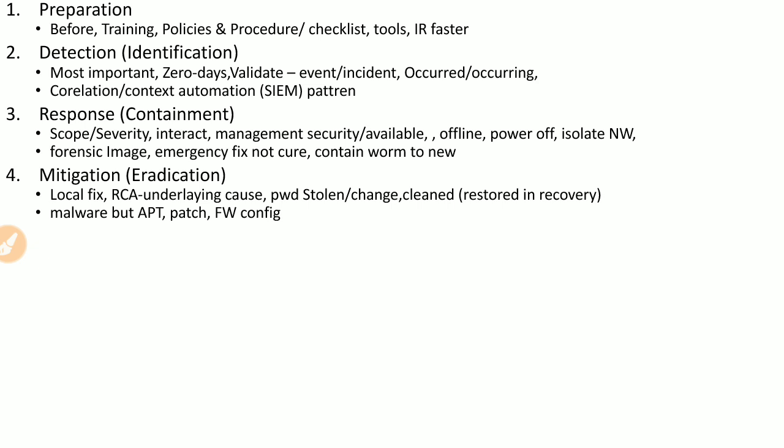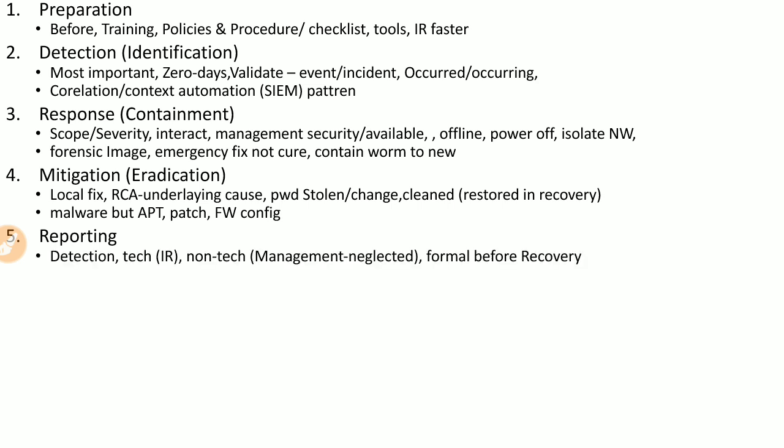One step can be patching the vulnerability that led to the compromise or adjusting firewall configuration to prevent future attacks. The reporting step is active from the moment you detect the event. You provide two kinds of reports: a technical report for incident response teams, and a non-technical report for management. The non-technical report is often neglected, but it is required to clarify the business requirements of the incident response process with management.